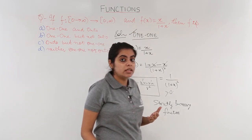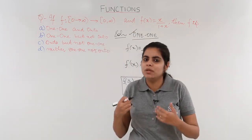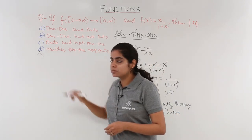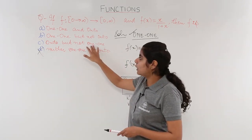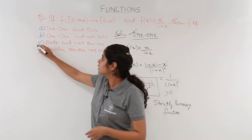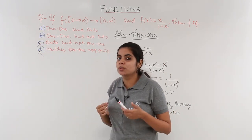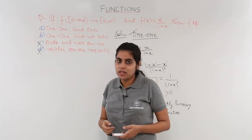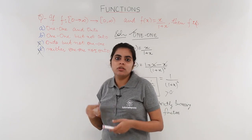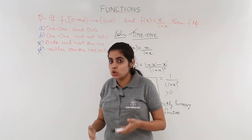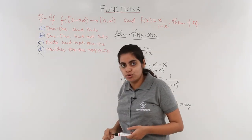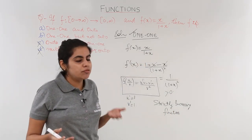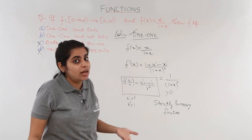Now we check the options: wherever we find 'not one-one,' those can be cancelled. The 'neither one-one nor onto' option is cancelled, and the 'onto but not one-one' option is cancelled. Two options remain — option A and option B — both of which have one-one. So we now need to solve for onto as well.